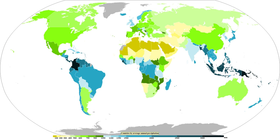The wet, or rainy, season is the time of year, covering one or more months, when most of the average annual rainfall in a region falls. Areas with wet seasons are dispersed across portions of the tropics and subtropics. Savannah climates and areas with monsoon regimes have wet summers and dry winters. Tropical rainforests technically do not have dry or wet seasons, since their rainfall is equally distributed through the year. Some areas with pronounced rainy seasons will see a break in rainfall mid-season when the intertropical convergence zone or monsoon trough moves poleward during the middle of the warm season.